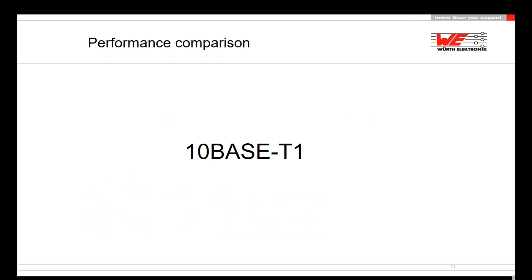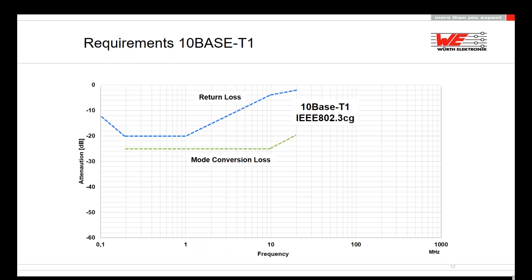For 10BASE-T1, there is 10BASE-T1S for short range at 15 meters, and 10BASE-T1L for long reach at 1,000 meters — we focus on the long reach. The limit parameters shown are the return loss and mode conversion loss from IEEE 802.3cg. The blue line is the return loss and the green line is the mode conversion loss. The challenge is the frequency range between 100 kHz and 1 MHz — we need a very high inductance to reach good values at these frequencies, requiring very large common mode chokes with many turns.